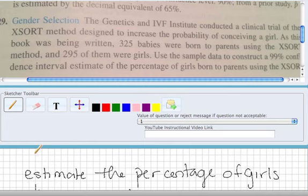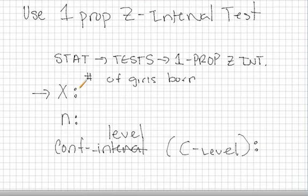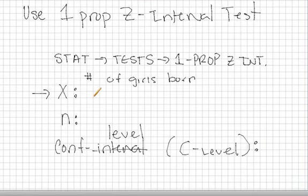So that is our statistic of interest, the amount of girls born using the XSORT method for this particular experiment. So 295.